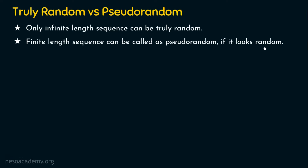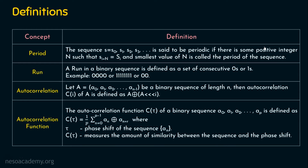We need certain definitions to be known, so we will see the definitions first. The definitions include period, run, autocorrelation, and autocorrelation function. What is a period? If we have a binary sequence s0, s1, s2, s3 and so on, we call it a periodic sequence if there is some positive integer n such that s(i+n) equals s(i), and the smallest value of n is called the period of the sequence. If a particular portion of the binary sequence is repeated, that portion is called a period.